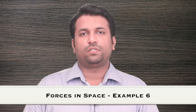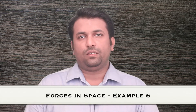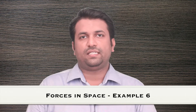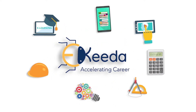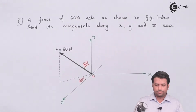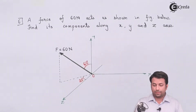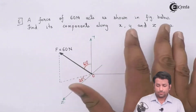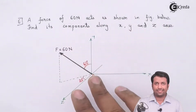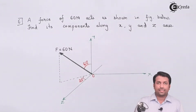Hello students. In this video we'll see the next example for forces in space. We have seen around five examples where we found the force vector when two points are given or the angles are known. In this example the force magnitude is 60 Newtons and the force is making an angle of 60 degrees with the y-axis. I need to find the components of the force along the x-axis, y-axis, and z-axis.